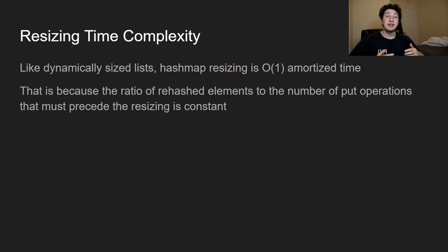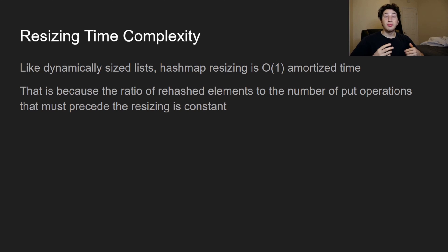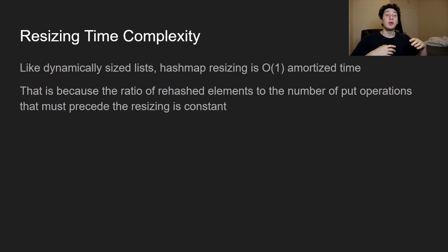The time complexity of resizing is technically O(N) since we rehash all N elements. However, similar to the logic for dynamically sized lists, we can justify this as O(1) amortized time. The reason: the ratio of rehashed elements to prior put operations remains constant — if we put four elements before rehashing four, that's a ratio of one; similarly for eight puts before rehashing eight. Since this ratio stays constant, the amortized cost per operation remains constant, preserving our overall O(1) time complexity.